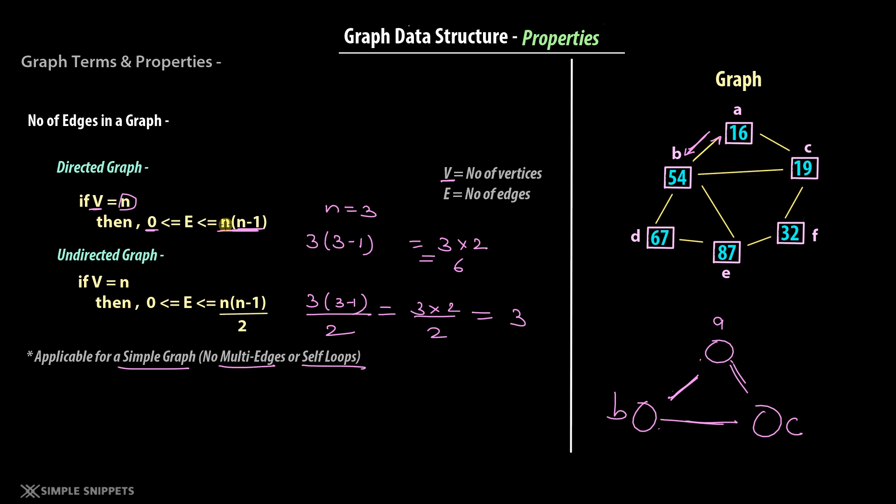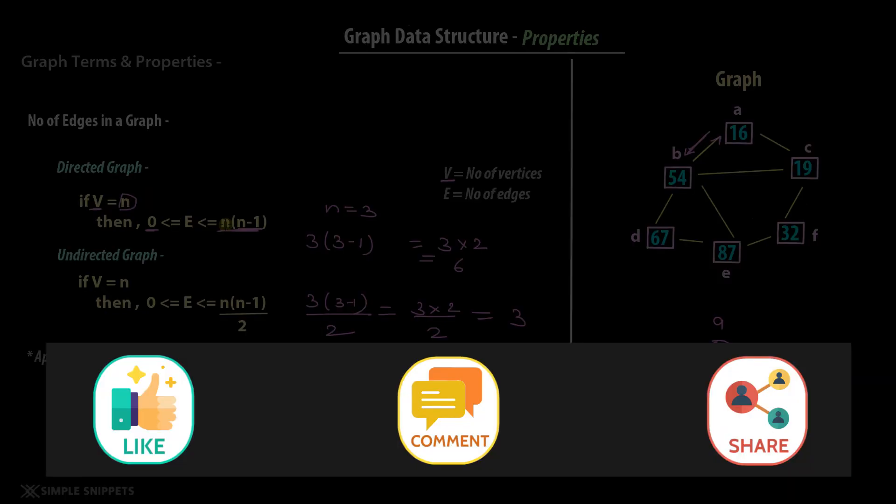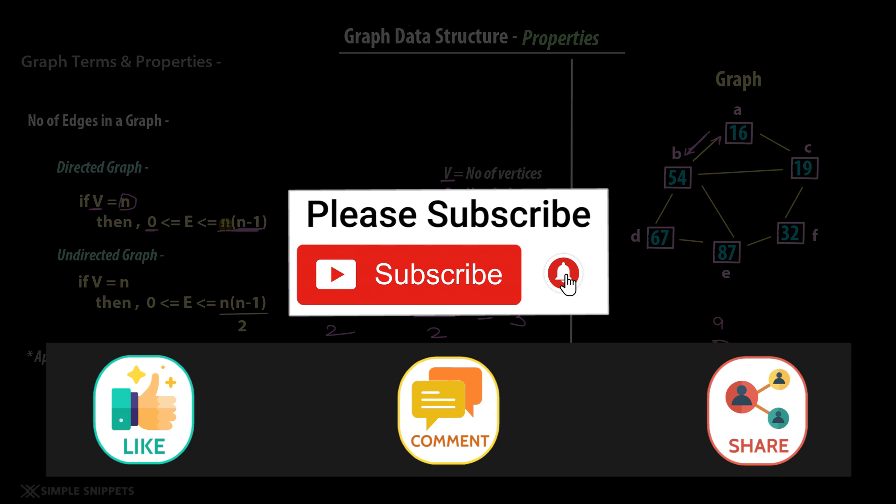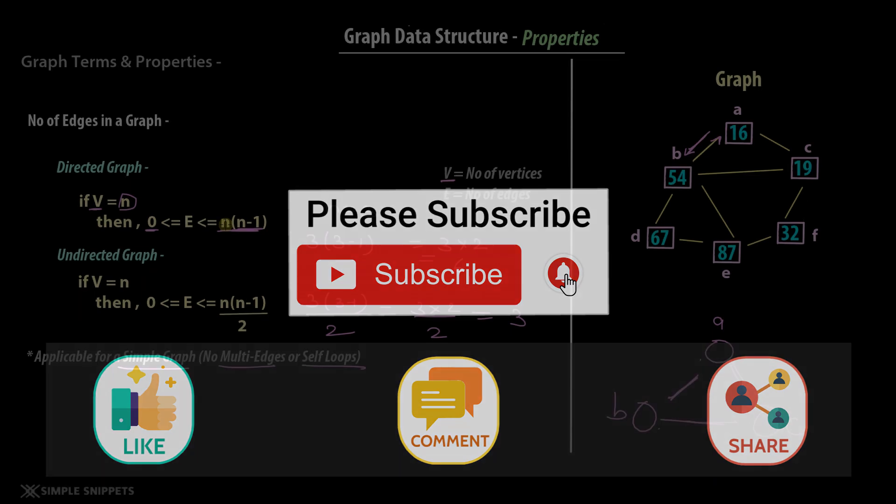So this was some more graph terminology, properties, formulas, and theory on graph data structure. Keep these terminologies in mind: adjacency, self loop, multi-edge, directed, undirected, path, number of edges, etc. These terms and properties will be used as we move ahead in the graph data structure videos and into the implementation. We're still in the theory phase but slowly we'll move into implementation as well. If you liked this video please give it a like, let me know in the comments, share it with your friends, and I'll see you guys in the next one.